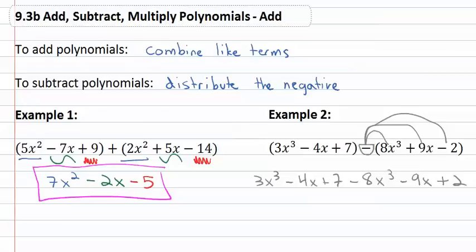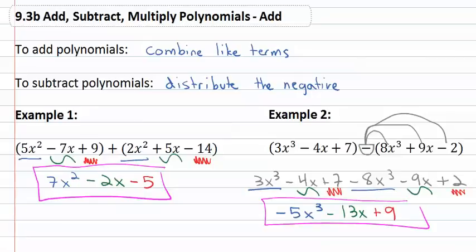Now we simply have to go through and identify the like terms. 3x cubed is like the negative 8x cubed, that gives us negative 5x cubed. The negative 4x is like the negative 9x, negative 4 and negative 9 is negative 13x. And finally, 7 plus 2 is 9. When we subtract the polynomials, we get negative 5x cubed minus 13x plus 9.